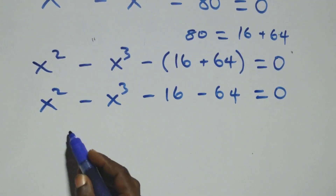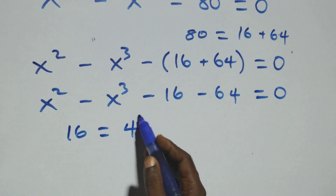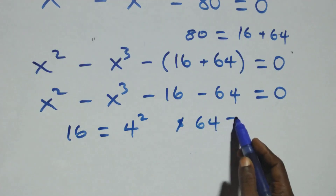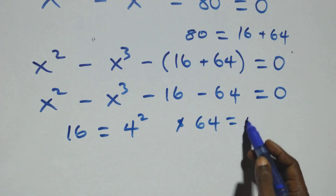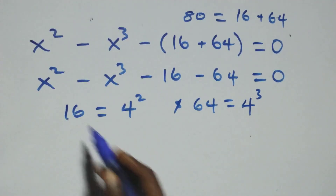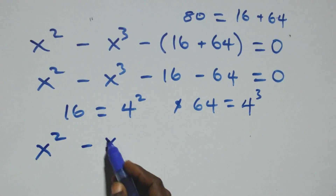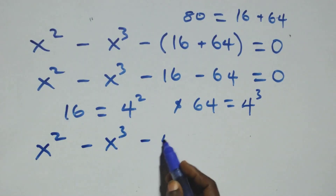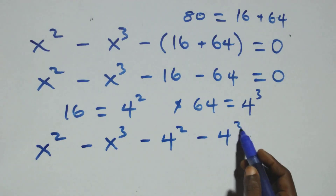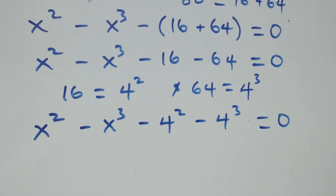Now, 16 can be expressed as 4 times 4, that is 4 squared, and also 64 can be expressed as 4 times 4 times 4, that is 4 cubed. Then this equation becomes x squared minus x cubed minus 4 squared minus 4 cubed equals zero.